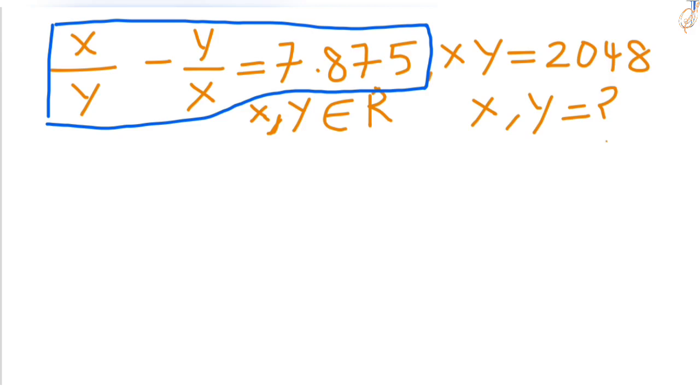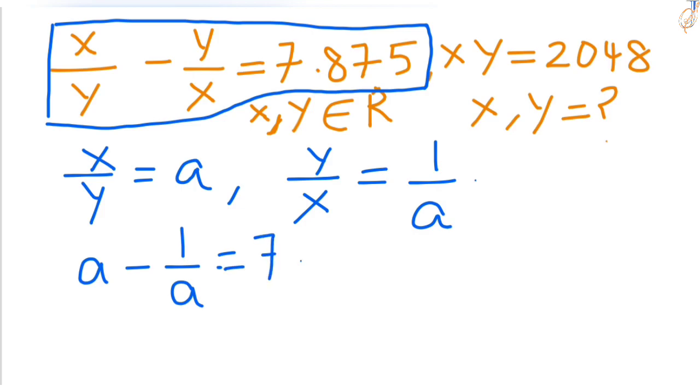Observe this equation x by y minus y by x. This y by x looks like the reciprocal of x by y. Let x by y equal to a, then y by x we can write as 1 by a. Let's substitute in the equation, which is a minus 1 by a equal to 7.875.